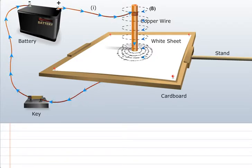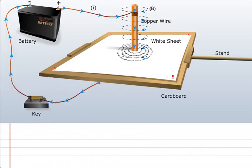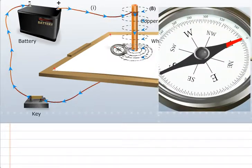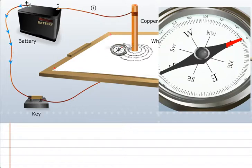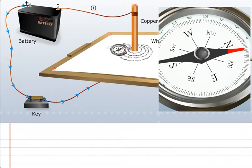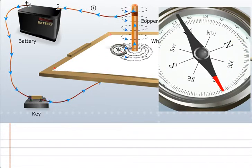You will observe that when the current flows through the wire, the iron filings arrange themselves in a concentric circular pattern. By placing a magnetic compass on any circular field line represented by the iron filings, you can also detect the direction of the magnetic field lines. The direction of the compass needle indicates the direction of the magnetic field. Further, if you change the direction of the current in the wire, you will observe that the direction of the compass needle is reversed.